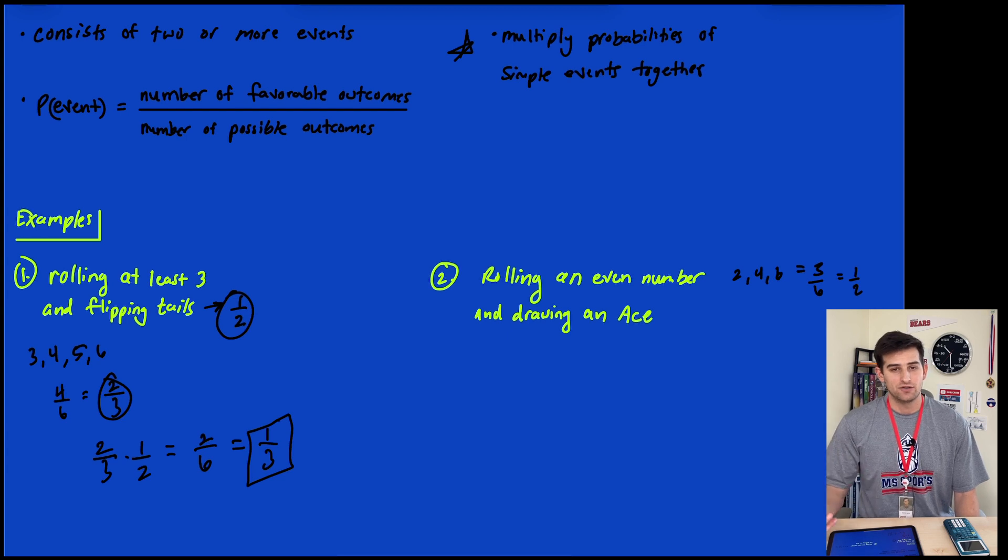For drawing an ace from a deck of cards, there are 52 cards in the deck and there are four aces: ace of spades, clubs, hearts, and diamonds. So there are four aces out of 52 total cards, which is 4/52. This reduces to 2/26, which reduces to 1/13.